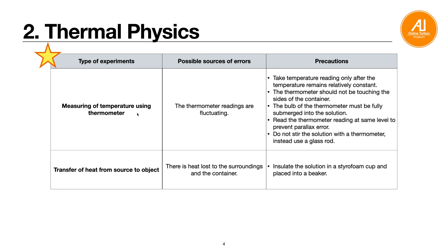Next: thermal physics. You might get it occasionally but not that often. For measuring temperature using a thermometer, the reading might be fluctuating. Precautions include: first, take the temperature reading only after the temperature remains relatively constant — once stabilized, take the reading. Second, the thermometer should not be touching the side of the container to avoid heat loss to the surroundings. Third — very important — the bulb of the thermometer must be fully submerged into the solution so you can measure the temperature accurately.